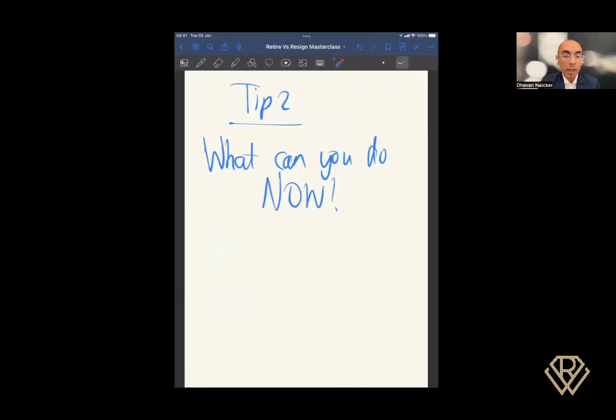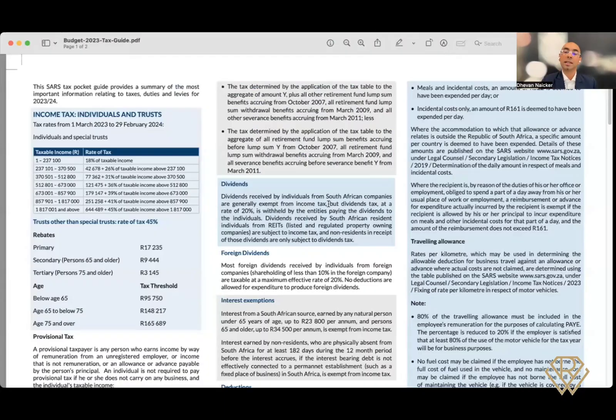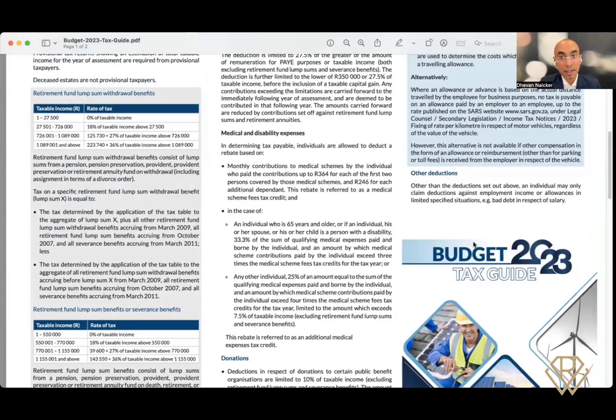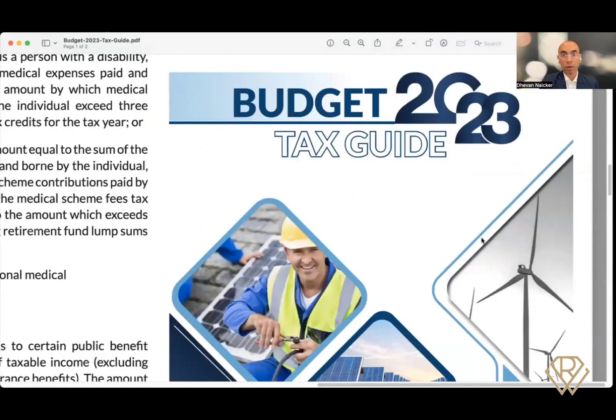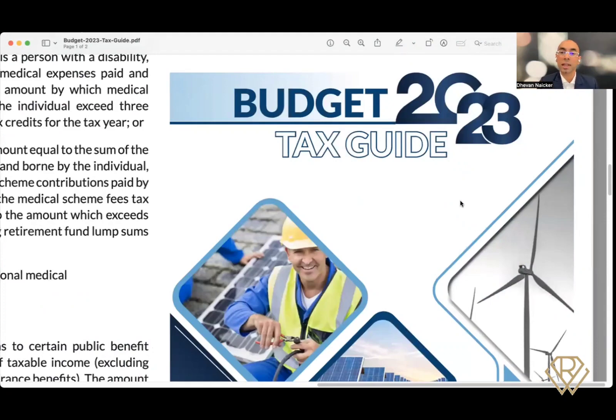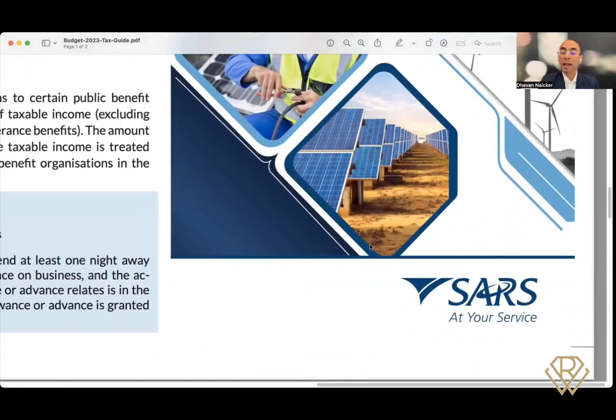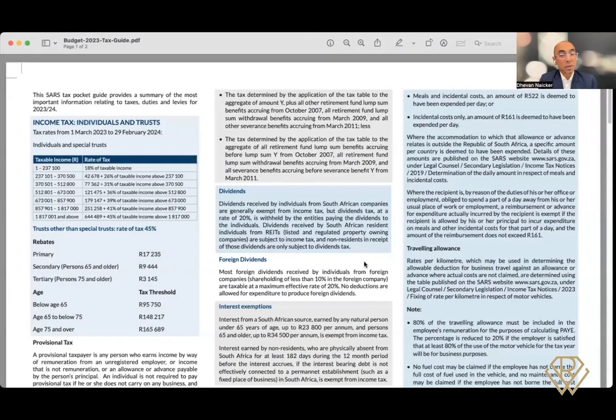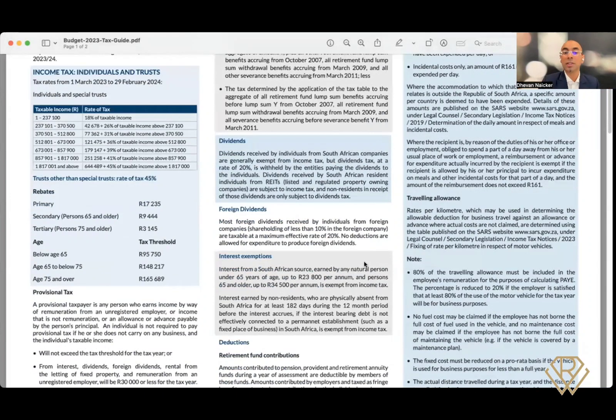I also want to then do a quick check-in with you on the SARS tax guide. Now, I'm showing you a tax guide that was the latest when I had produced this video. Make sure you're working with the latest tax guide when you are working with your decision on whether to retire or resign. So you see here, I have the budget guide, 2023 tax guide. And notice inside this, all the information is given up front to you, which means SARS is telling you how they're going to tax you.